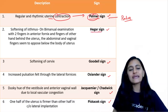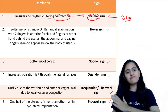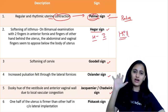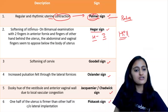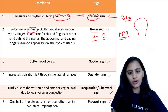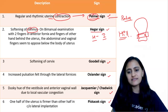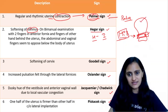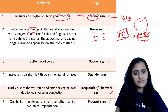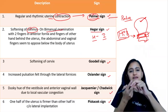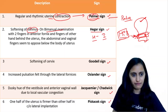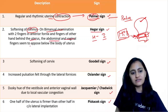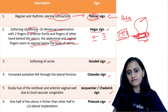Next is Hegar sign. Alphabetically, after H comes I, so remember 'Hi, Hegar.' Hegar sign is the softening of the isthmus. You have the uterus body, the isthmus, and the cervix. Softening of the isthmus is Hegar sign — 'Hi' (isthmus). On bimanual examination, with two fingers in the anterior fornix and fingers of the other hand behind the uterus, the abdominal and vaginal fingers seem to oppose below the body of the uterus due to this softening. Remember: isthmus softening = Hegar sign.